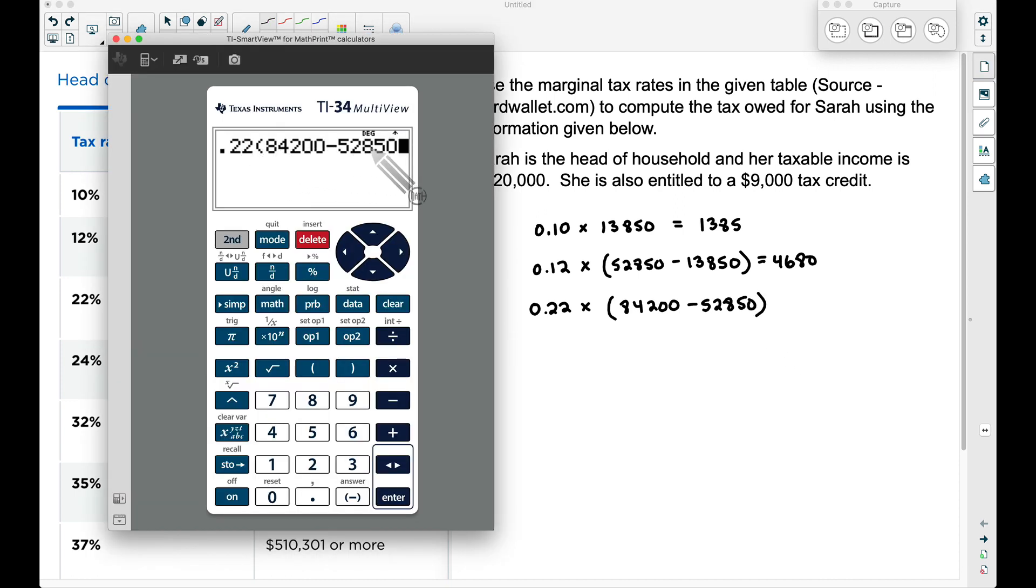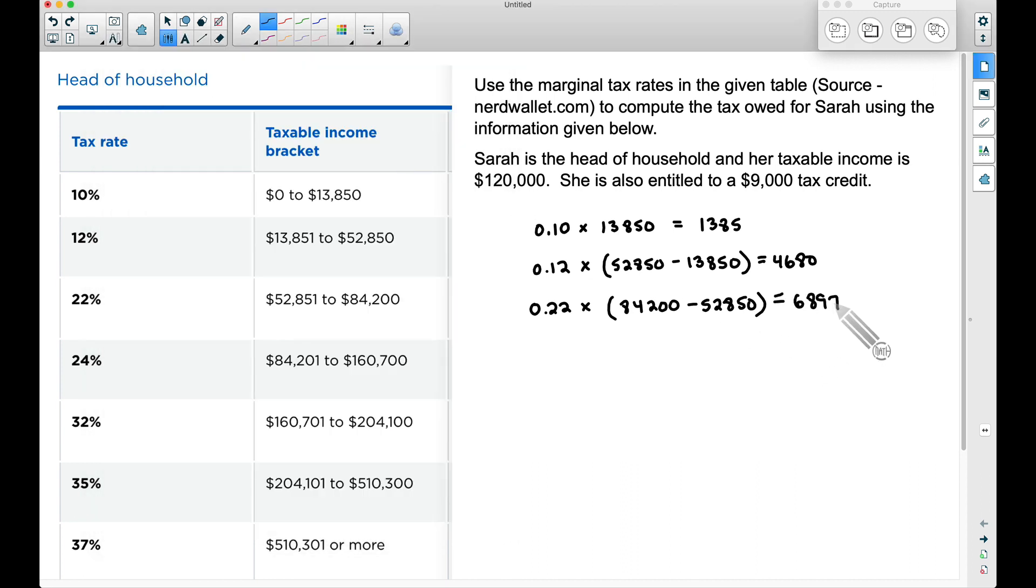And again, typing in something very similar to what we had from the previous step, we will get the amount of tax owed here to be $6,897. Now we're almost done. The next tax bracket is where Sarah's going to fall into, if you will, because Sarah did make $120,000. So $120,000 does fall somewhere in between here.